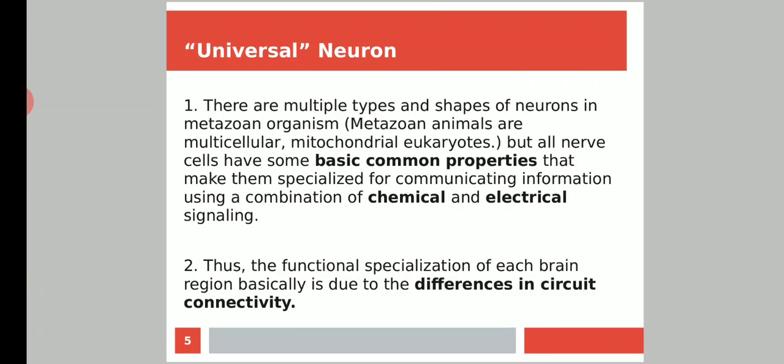Although there are multiple types and shapes of neurons in metazoan organisms, there is a certain universality in their nature. All nerve cells have basic common properties that make them specialized for communication, using a combination of chemical and electrical signaling—an electrochemical process.